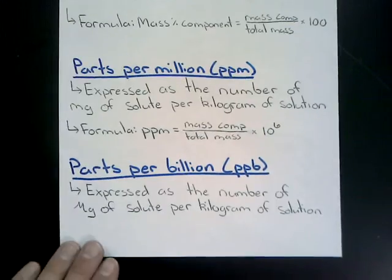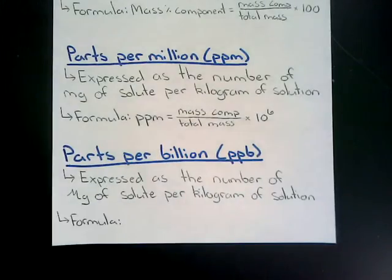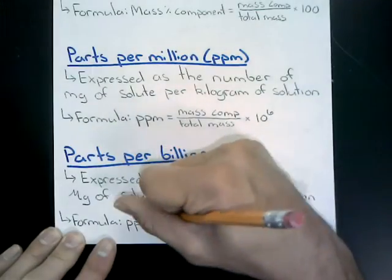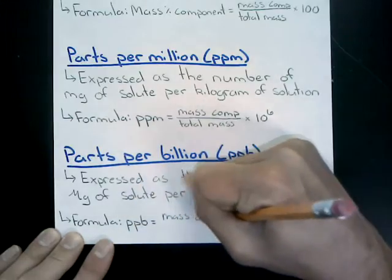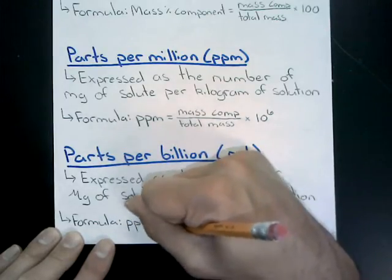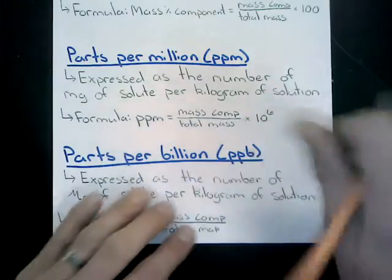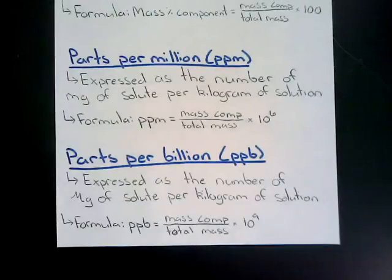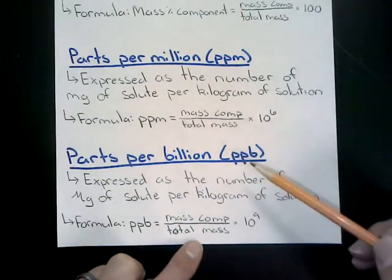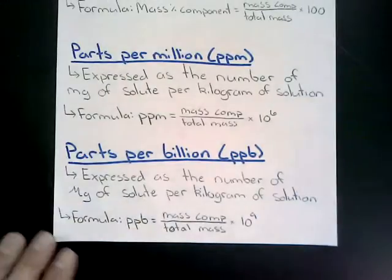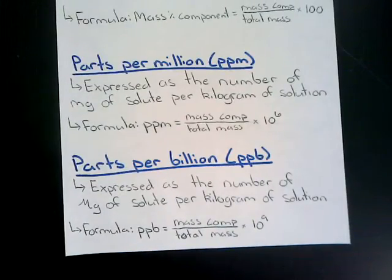With both parts per million and parts per billion formulas, the mass needs to be in the same unit on top and bottom. Make a note: the mass must be in the same unit when applying these formulas.